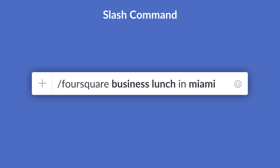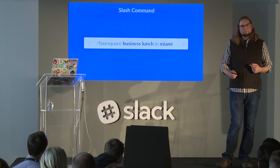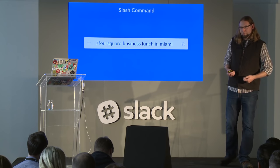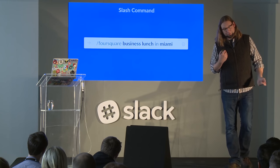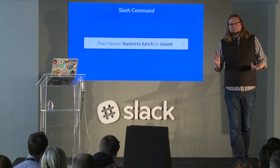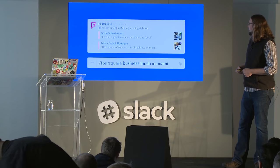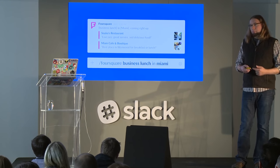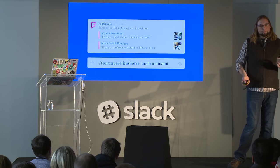So we've talked about notifications. Let's talk now about the second kind of integration — the slash command. Whereas notifications are just your app pushing messages into a channel, slash commands introduce a degree of interactivity. Users can make requests to your app or integration and you can post back in response. Here's an example of the Foursquare slash command. Foursquare is a service for searching for restaurants and other venues, so the user might type '/foursquare business lunch in Miami', and Foursquare can come back with some results. It looks just like a notification, with structure to show restaurant options, little icons to preview what the restaurant looks like, and even some brand coloring.